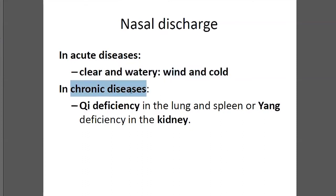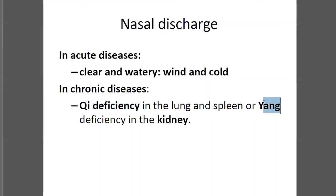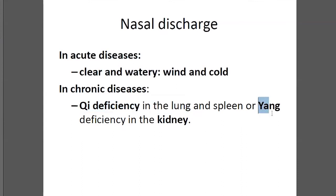And for chronic illness, discharge usually comes from deficiency — spleen qi deficiency or spleen yang deficiency. Qi is governed by the lung, and the root of yang is in the kidney. So qi deficiency may be more lung qi deficiency, or more spleen qi deficiency. And yang deficiency — the root of yang is in the kidney.